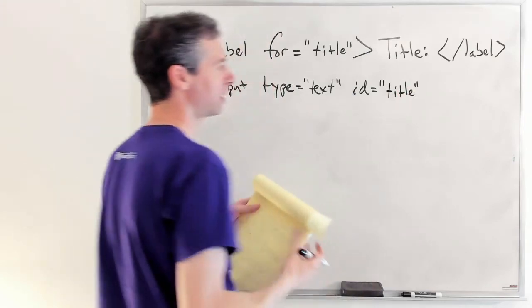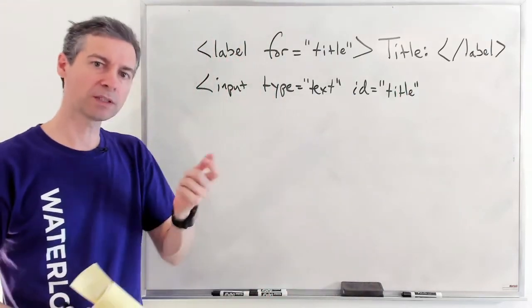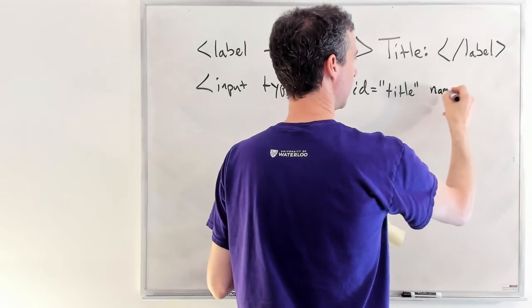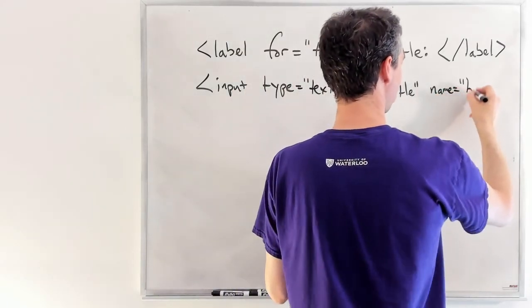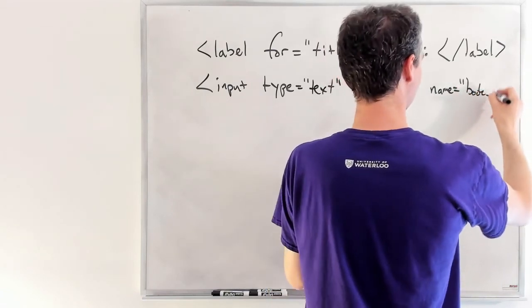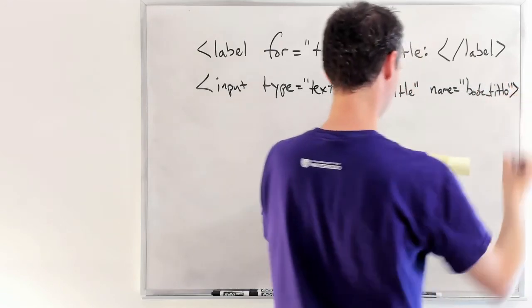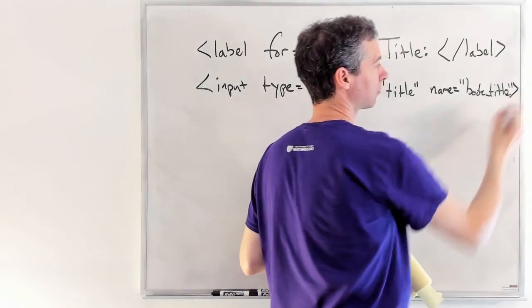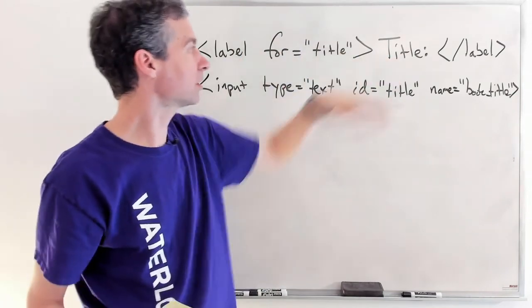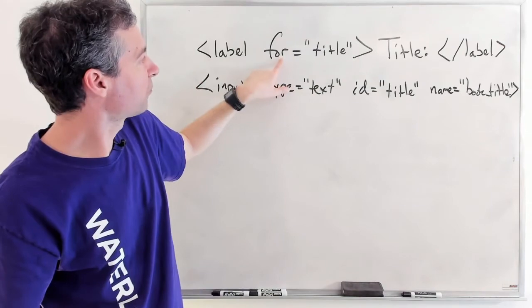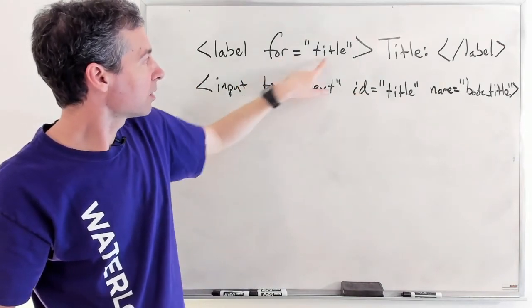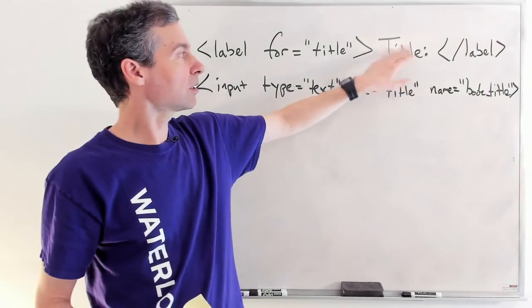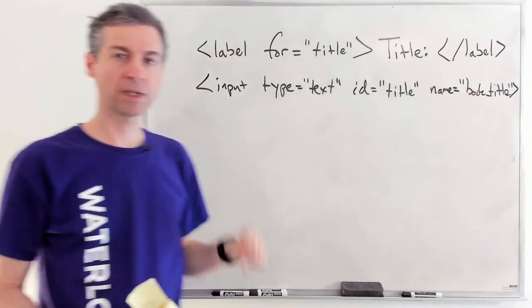When we have an input tag, and then we have lots of different input tag types. And so for example, one of them is to have it be a text input type. So we will expect the user to type something. Now we can give it an ID. I need to give it the ID title. These IDs become, are used for uniquely identifying a tag in your HTML. And then we can give it a name. And let's say I name it, book_title here. And so that's the full input tag. It's a tag on its own. It doesn't have a beginning and an end to it. Now this for, and this ID, if these are the same.